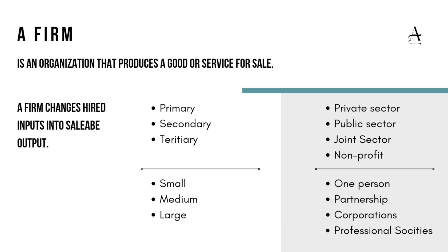Coming to the sector in which a firm operates: private sector, public sector, or joint sector. It could be for-profit or non-profit. Based on ownership, it could be a single owner — sole proprietorship — partnership, corporations, or professional societies like libraries, universities, and hospitals. These are the various ways in which we can classify a firm, and there have been questions in the past on this particular concept.